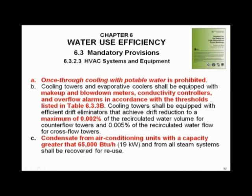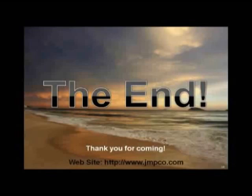ASHRAE 189.1 also requires conductivity controls to manage blowdown — that's going to be a given. Look at item C: any condensate from air conditioning units over 65,000 BTUs — that's five and a half tons — you've got to collect it and reuse it. This is the green building code already adopted by the Army Corps of Engineers, and many cities have adopted it as well. It's not yet in 90.1, but it's coming. If you're building to the green building code, you'll need to collect that condensate and reuse it.